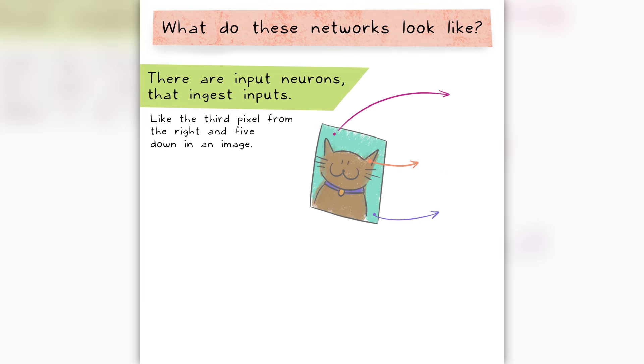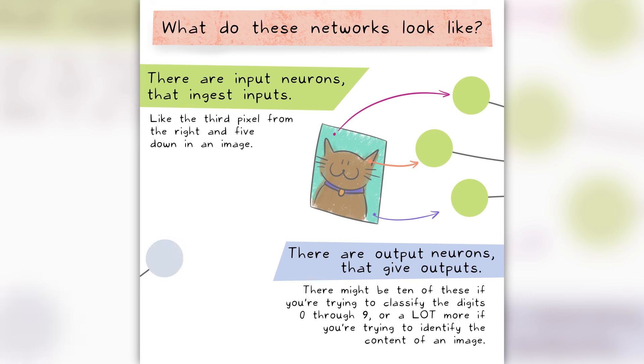What do these networks look like? There are input neurons that ingest inputs, like the third pixel from the right and five down in an image. There are output neurons that give outputs. There might be ten of these if you're trying to classify the digits zero through nine, or a lot more if you're trying to identify the content of an image.